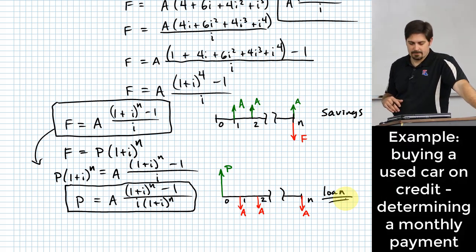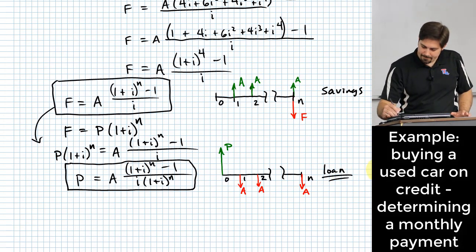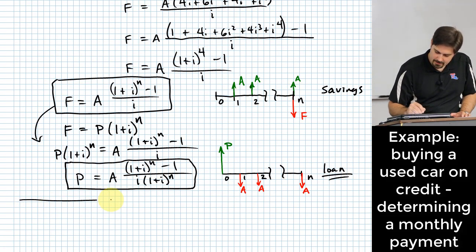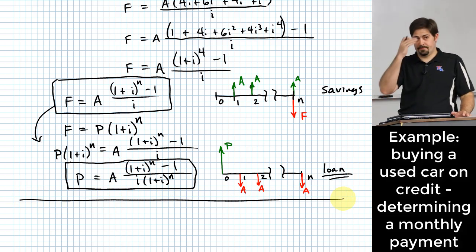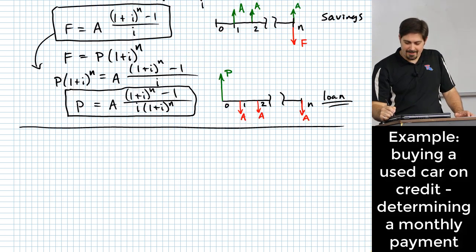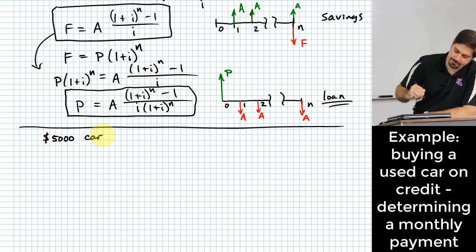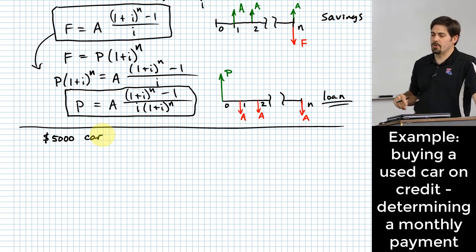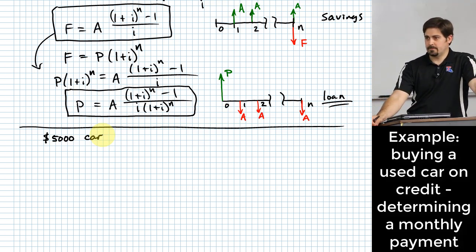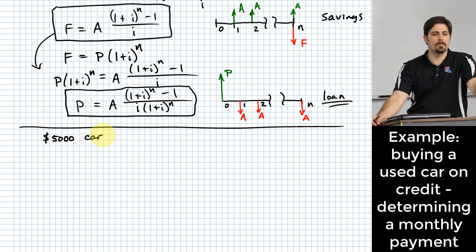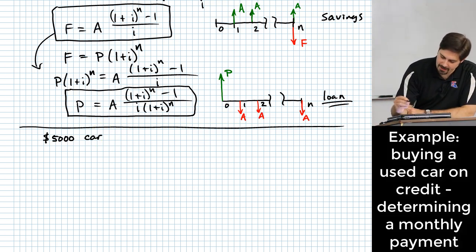Let's do a problem. You just came to college and your parents didn't buy you a car. You want a $5,000 car. Your parents aren't going to buy it and you don't have the $5,000, so you're thinking about taking out a loan. What's a typical interest rate for purchasing a car? Let's say you shop around and find a 6% interest rate.